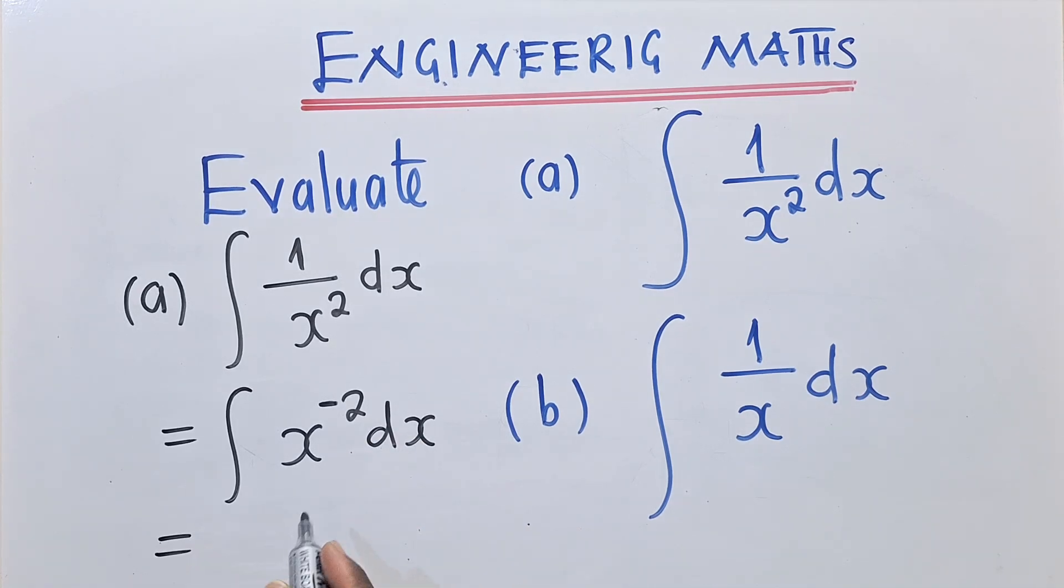So when integrating, we always add a 1 to the power. So this will be x power negative 2 plus 1. And then down here, we shall say over negative 2 plus 1.